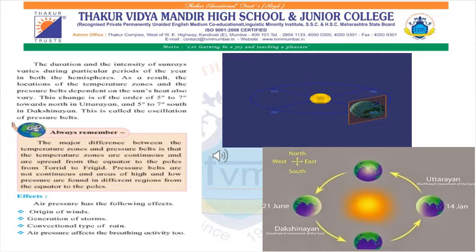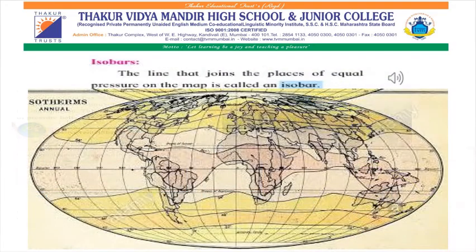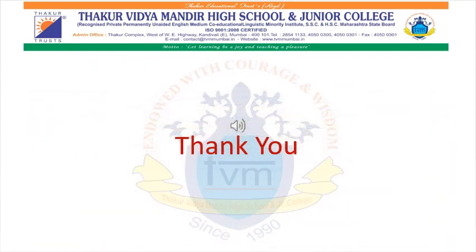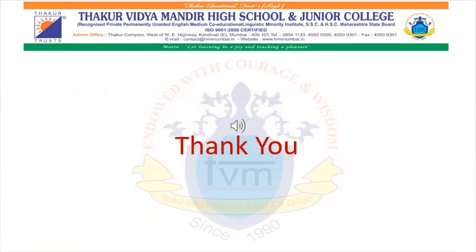The effect of air pressure includes the origin of winds, generation of storms, the convectional type of rain, and also affects breathing activity. The line that joins places of equal pressure on a map is called an isobar. Thank you, students.